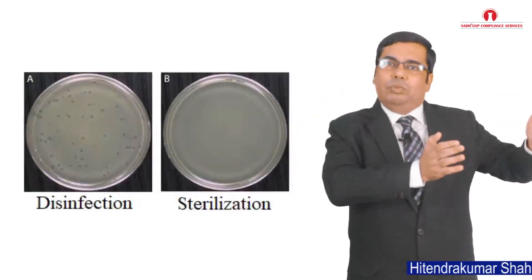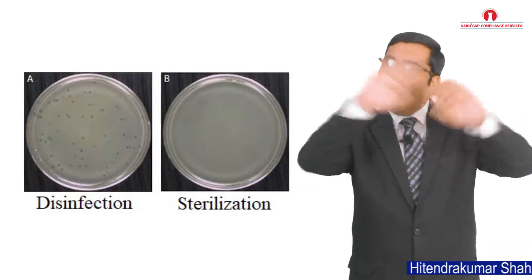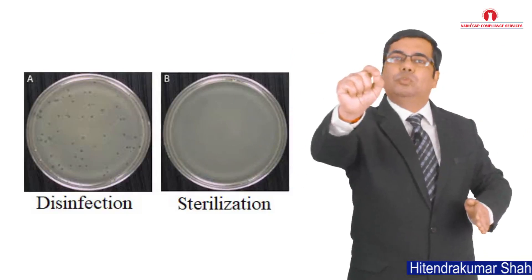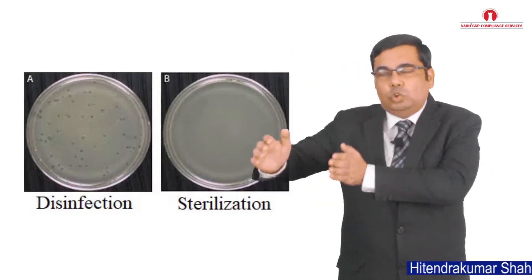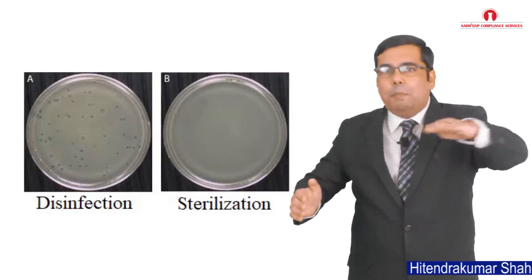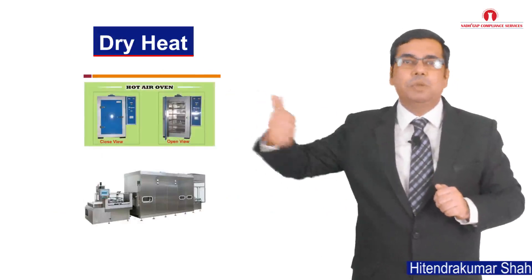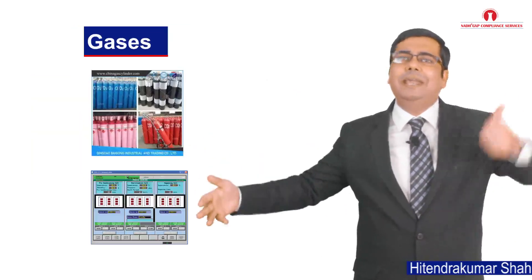Sterilization is the process which is used for complete removal or destruction of all living organisms including bacterial spores, while disinfection is the process which is used for destruction of many types of pathogenic organisms. Sterilization can be achieved by different ways, for example by using dry heat, moist heat, filtration, chemical, radiation and gases.